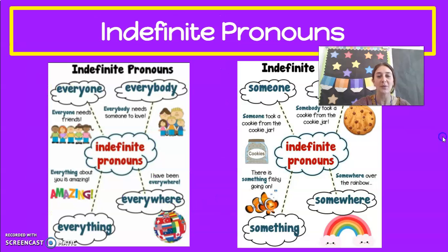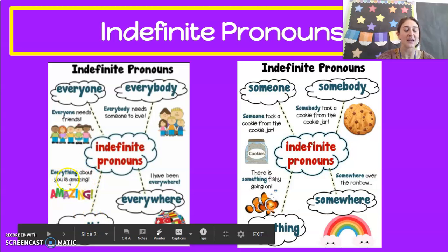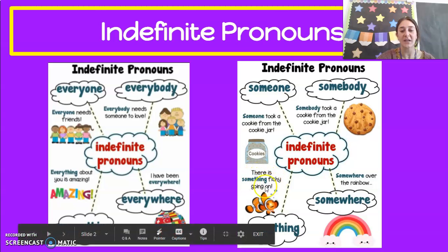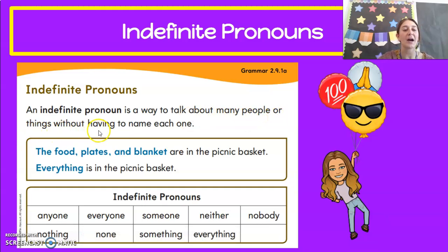Before we get started, let's just review what we've learned this week. Indefinite pronouns: Everyone — Everyone needs friends. Everybody — Everybody needs someone to love. Everything — Everything about you is amazing. Everywhere — I have been everywhere. Someone — Someone took a cookie from the jar. Somebody — Somebody took a cookie from the cookie jar. Something — There is something fishy going on. Somewhere — Somewhere over the rainbow. An indefinite pronoun is a way to talk about many people or things without having to name each one.